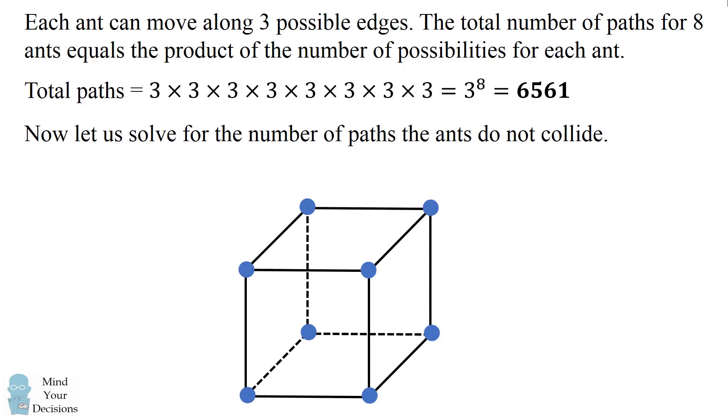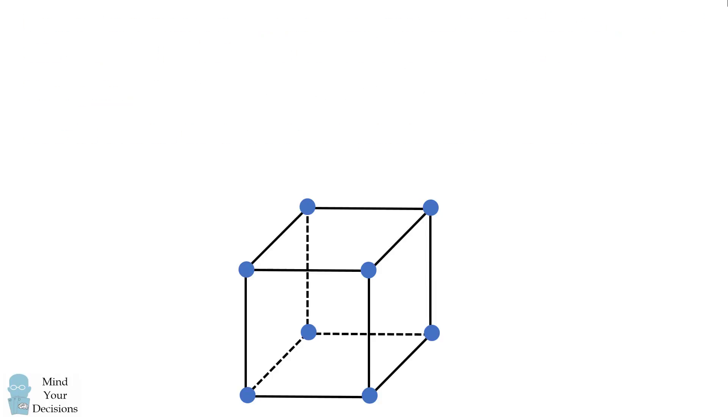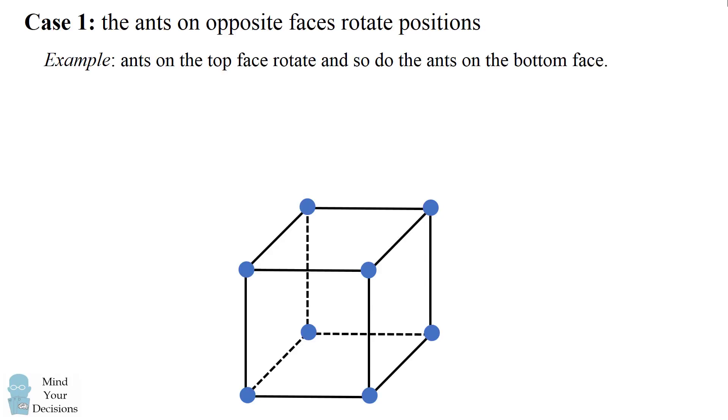Now we need to count the number of paths in which the ants do not collide. So one way the ants might not collide is that the ants on opposite faces rotate positions. For example, we can have the ants on the top face rotate positions and have the ants on the bottom face rotate positions.